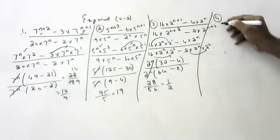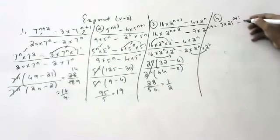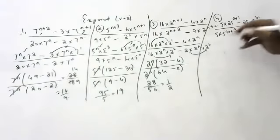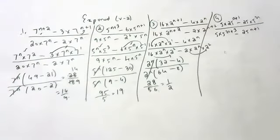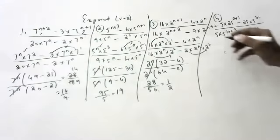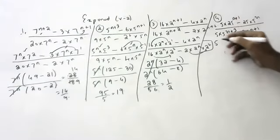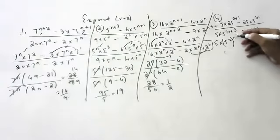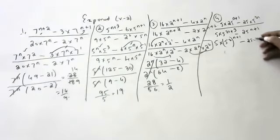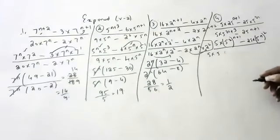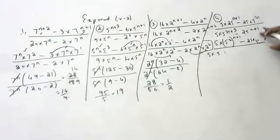Next question: 5 into 25 to the power n plus 1, minus 25 to the power 2n, divided by 5 into 5 to the power 2n plus 2. Now, first convert 25 into 5 squared. So 5 into 5 squared to the power n plus 1, minus 5 squared to the power 2n, which gives 5 to the power 2n.